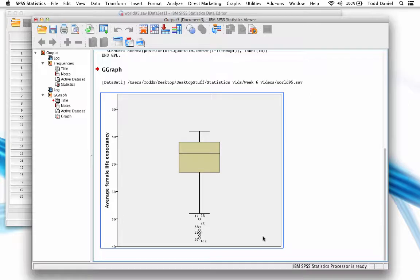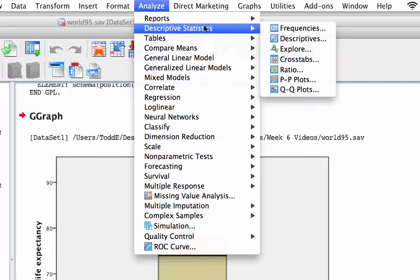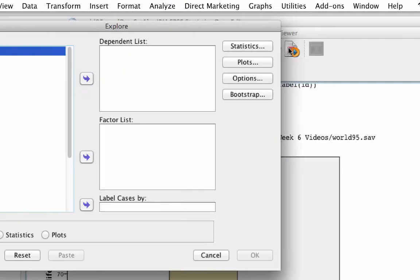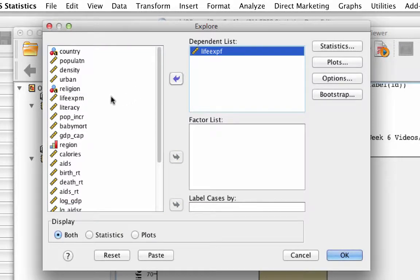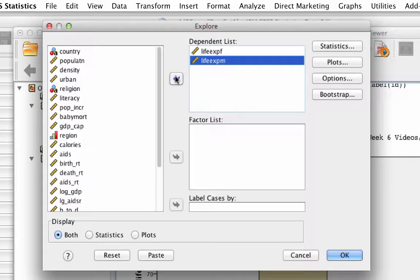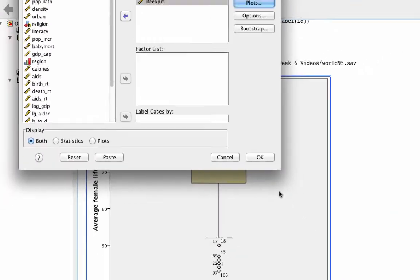There's our box plot. Alternately, we could create a box plot using the explore command. So go to Analyze, Descriptive Statistics, Explore. Move average female life expectancy and average male life expectancy into the dependent list and click on plots. Check normality plots with tests and unclick stem and leaf. Click continue and OK.